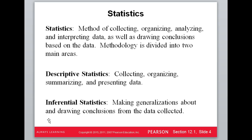The two main branches we discuss are descriptive and inferential statistics. In descriptive statistics, we collect, organize, and present data in a way that conveys the message quickly and effectively. Inferential statistics is when we make generalizations from the data and draw conclusions toward the entire population from a small subset of the population.